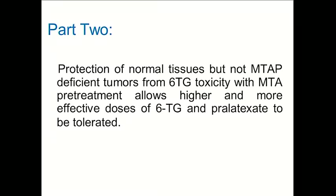Part 2 of this presentation asks: can we protect normal tissues but not MTAP-deficient tumors from 6-thioguanine using methylthioadenosine pretreatment, to allow higher and more effective doses of 6-thioguanine and pralatrexate to be administered? This idea was generated by our colleague Martin Lubin.